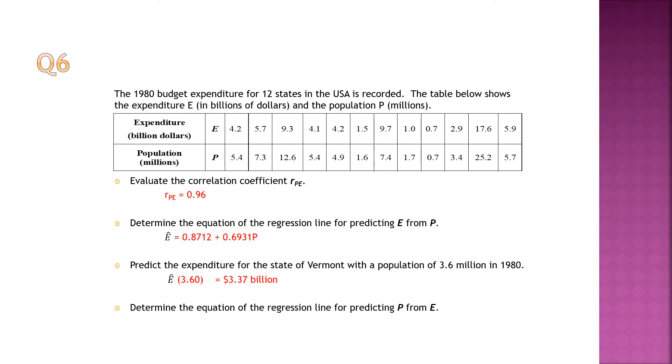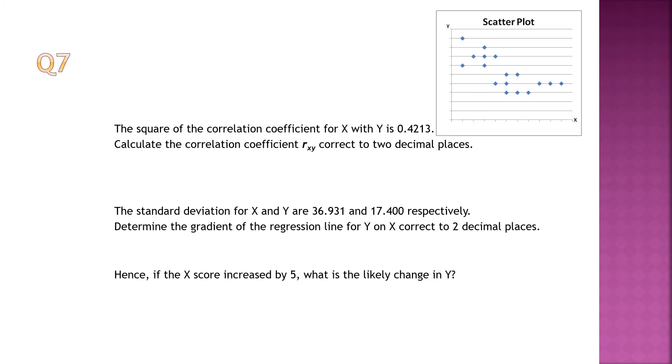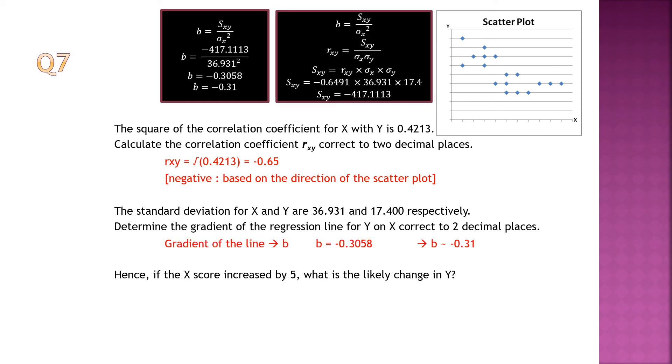Okay, same goes for this. Determine the equation for predicting E from P. If you want to predict E from P, E will be Y. P will be X. Then you just plug in into the equation. Now you want to predict P from E. You got to re-enter everything in because now P is going to be Y. E is going to be X. All right. They've given you the square of the correlation coefficient there. You just square root. But why do you put a negative there? Look at the scatter plot. Line is coming down. Gradient of the line. How do you find the gradient of the line?